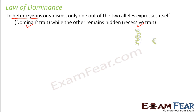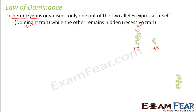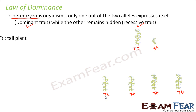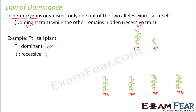This was the law of dominance, observed in Mendel's first experiment where a homozygous tall plant was crossed with a homozygous dwarf plant and all the plants in F1 were tall. Even though they were all heterozygous — having one dominant allele (capital T) and one recessive allele (small t) — capital T was dominant and got expressed. That is why the dwarf trait was hidden in the F1 generation.